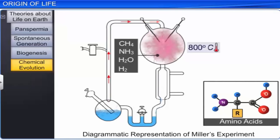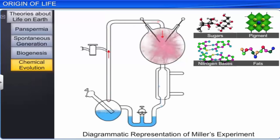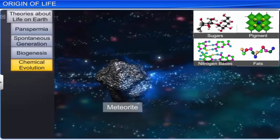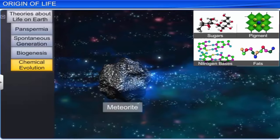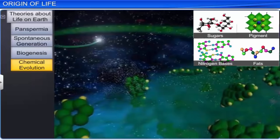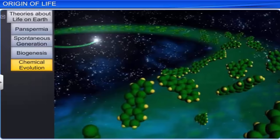Later on, while conducting similar experiments, other scientists observed the formation of sugars, nitrogen bases, pigment, and fats as well. Interestingly, when meteorite content was analyzed, similar compounds were found in them, which proved that similar processes occurred in other parts of the universe as well. Thereafter, the theory of chemical evolution was most widely accepted. However, there were still doubts about how the first cell came into existence.